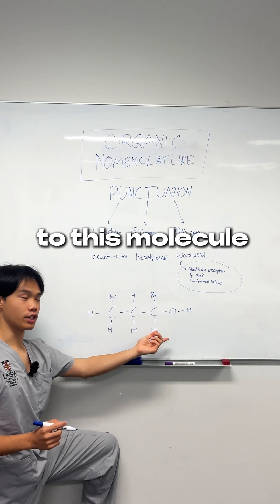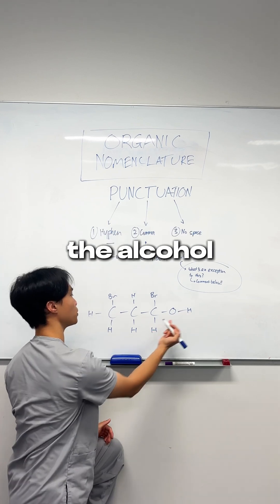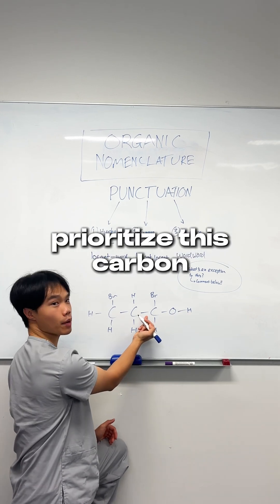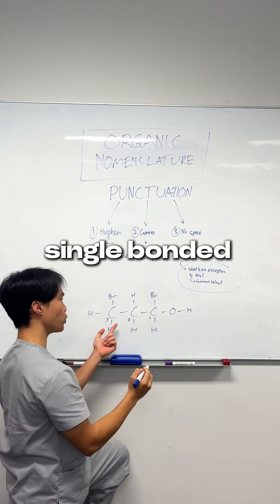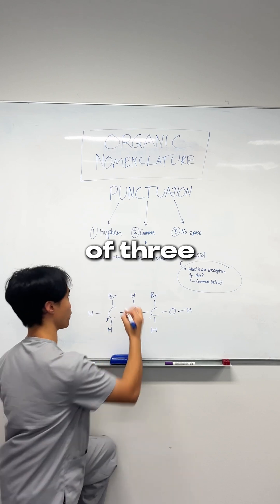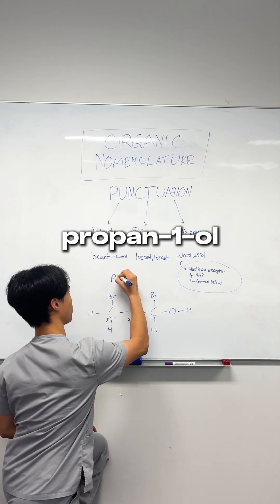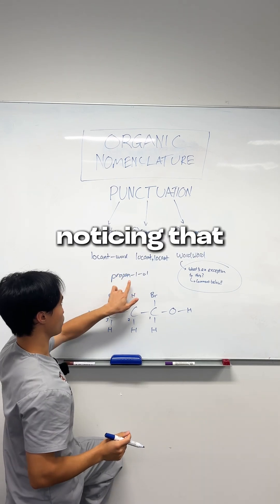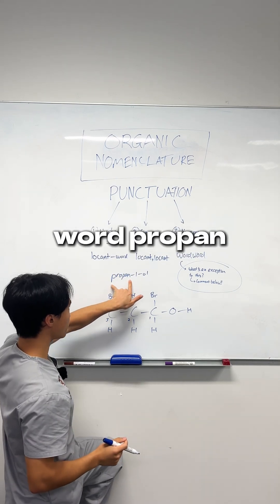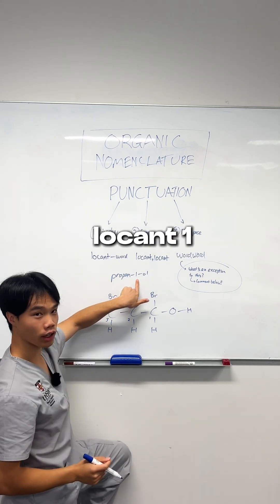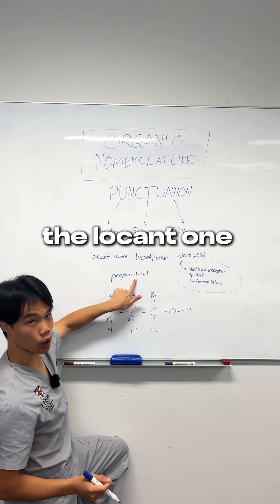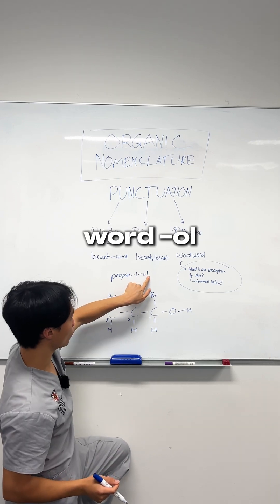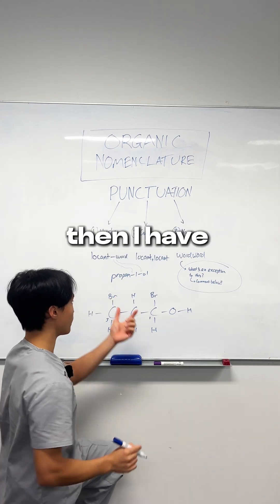Applying all that to this molecule down here — the alcohol means we prioritize this carbon as the lowest locant, and with a single bonded carbon chain of three, this is propan-1. Noting that between the word 'propan' and the locant '1', I have a hyphen, and between the locant '1' and the word 'ol', I have a hyphen once again.